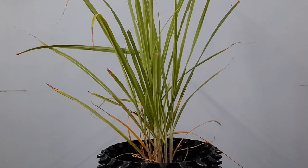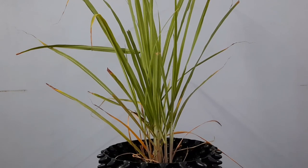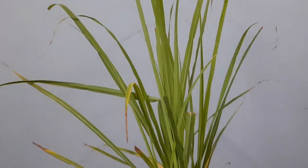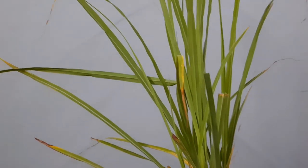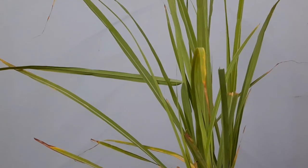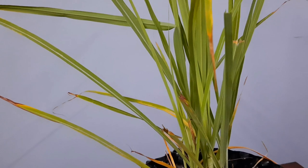Lemongrass, scientific name is Symbopagone. We call it barbed wire grass, silky heads, kuchin grass, malaba grass, and fever grass. Because we use the concoction of lemongrass in water to reduce fever.